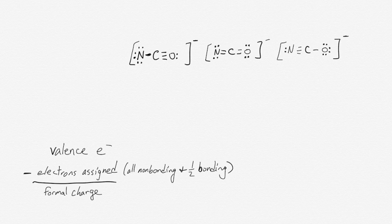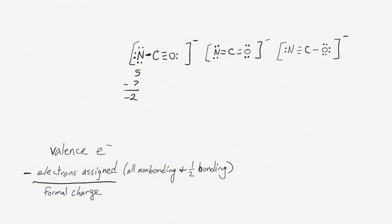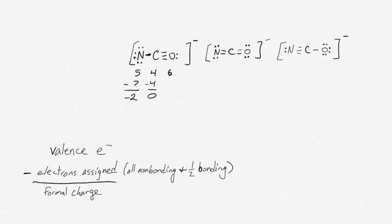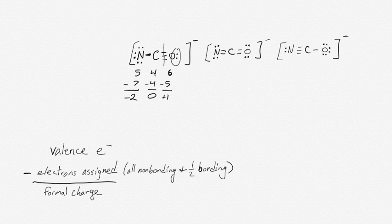We can use these numbers to calculate the formal charges for each atom. Nitrogen should have five electrons in its valence shell, and it has seven electrons assigned to it, so it has a formal charge of minus two. Carbon should have four electrons in its valence shell and has four assigned to it, so its formal charge is zero. Oxygen should have six, and it has five assigned to it — two from the lone pair and half of the bonding electrons — so it has a formal charge of plus one.